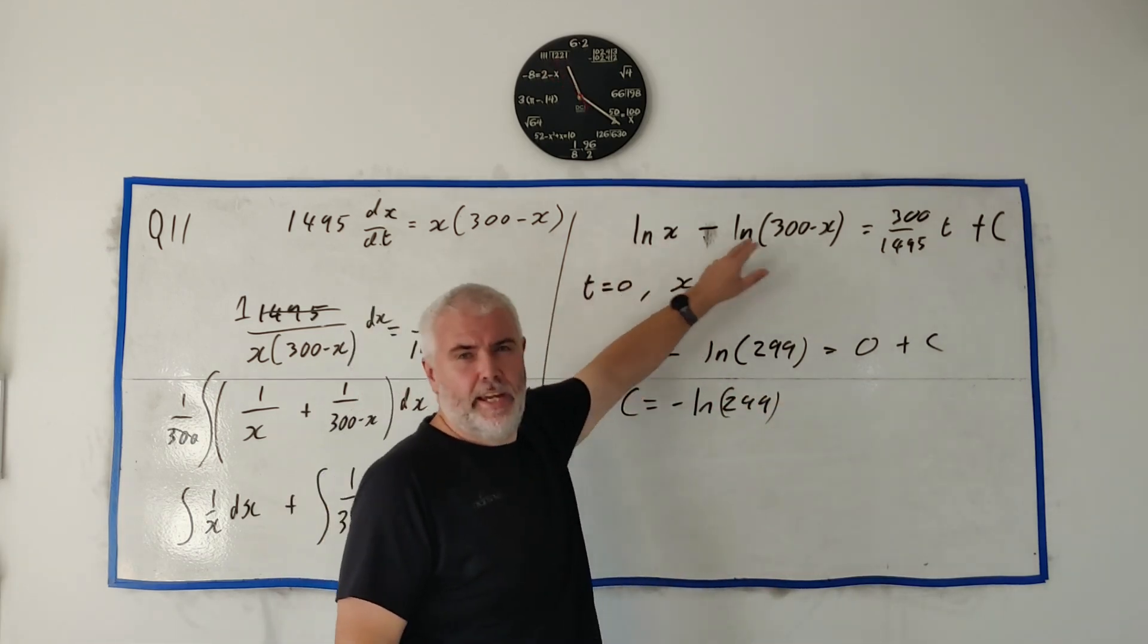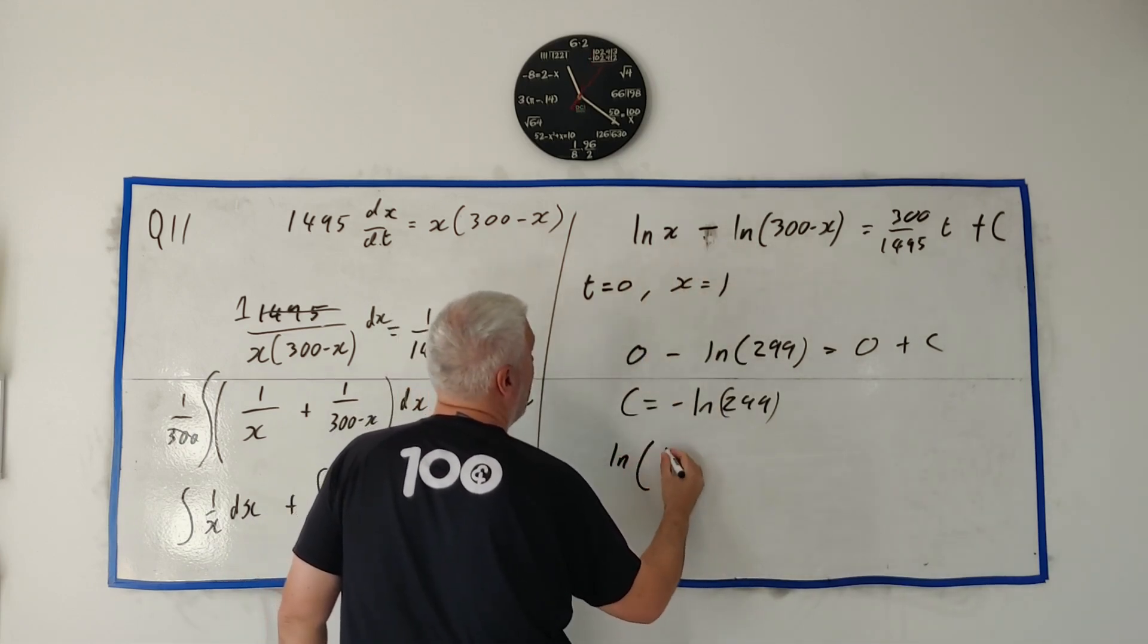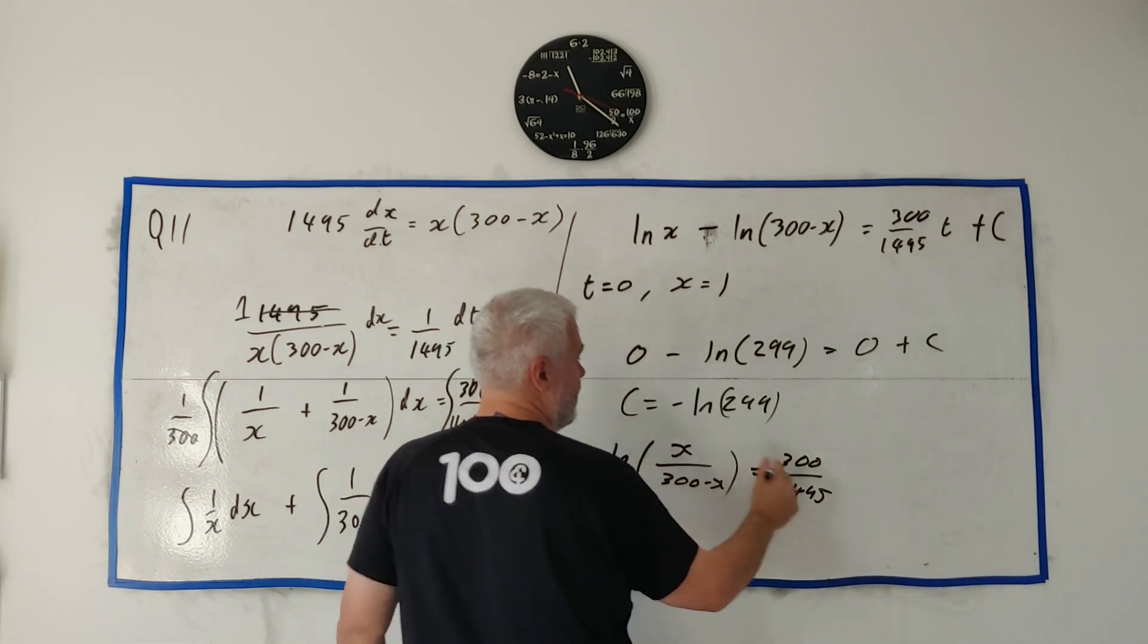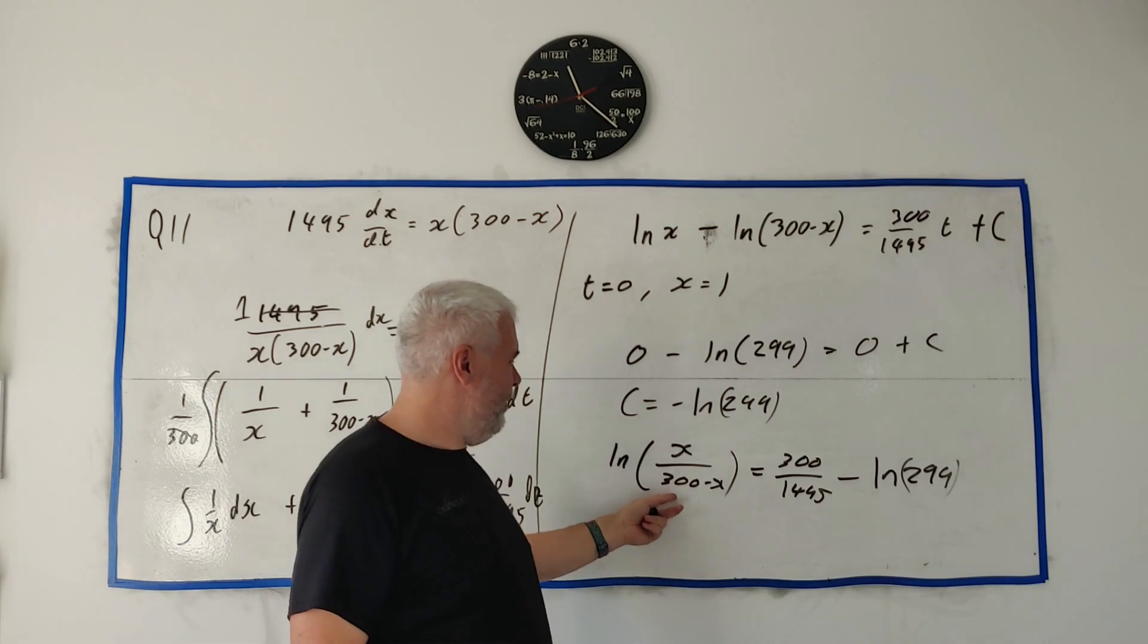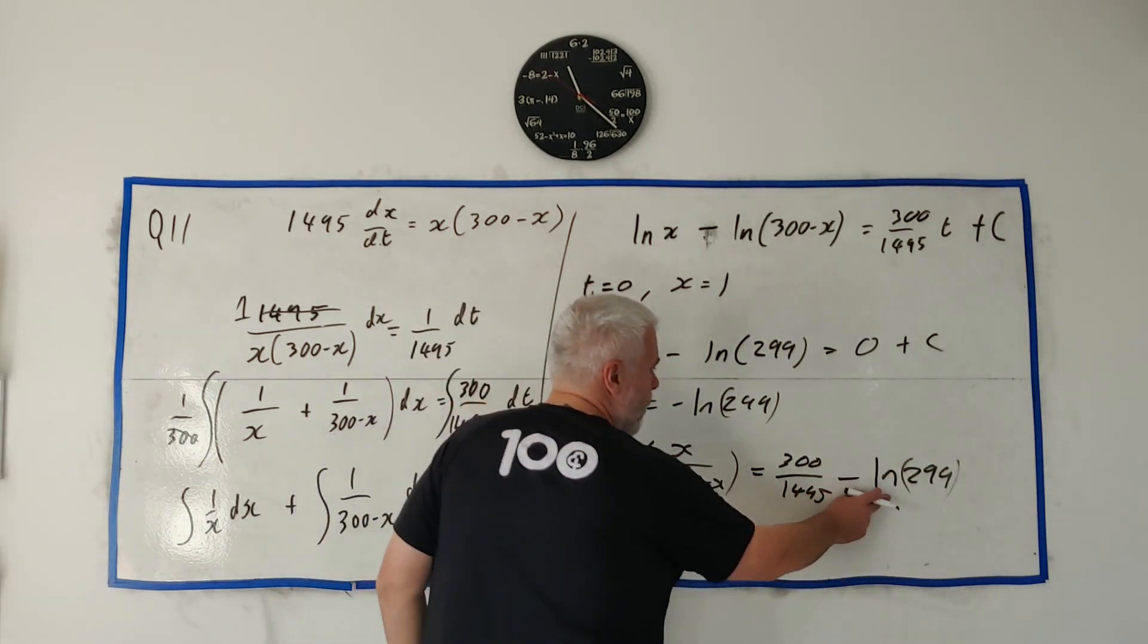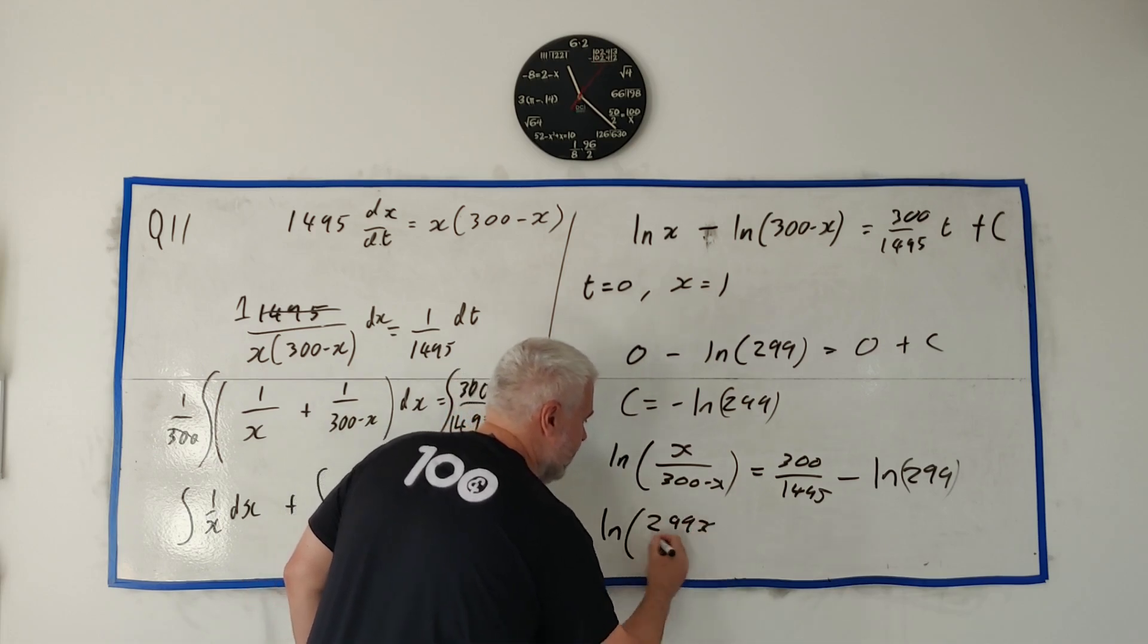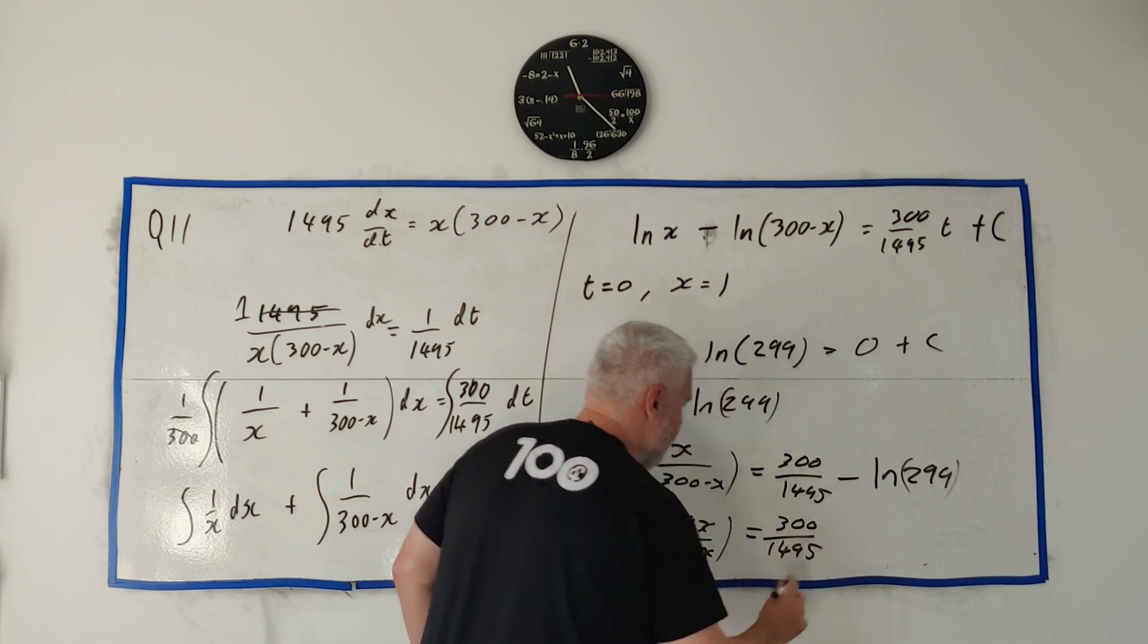So if I write the whole thing again, this time, let's put the natural logs together, because they asked us that. Natural logs, when we take away, they just end up dividing inside. So these two combine to get the natural log of x divided by 300 minus x. And that equals 300 over 1495. And c is minus natural log of 299. Oh yeah, they want all the natural logs together. Let's put all the natural logs properly together. And if we move this over to equals, it becomes a plus. Two natural logs adding are just like multiplying. So this 299 multiplies into here. So this combines to get 299x over 300 minus x is equal 300 over 1495 times t.